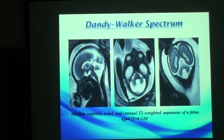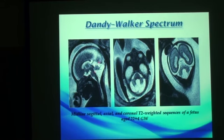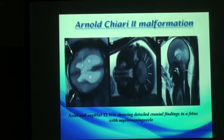The Dandy-Walker spectrum can be easily diagnosed by a triad: first, aplasia or hypoplasia of the vermis; second, a cystically dilated fourth ventricle and its connection to the cisterna magna giving a keyhole appearance; and third, hydrocephalus. In addition, the tentorium is in a higher position than normal.